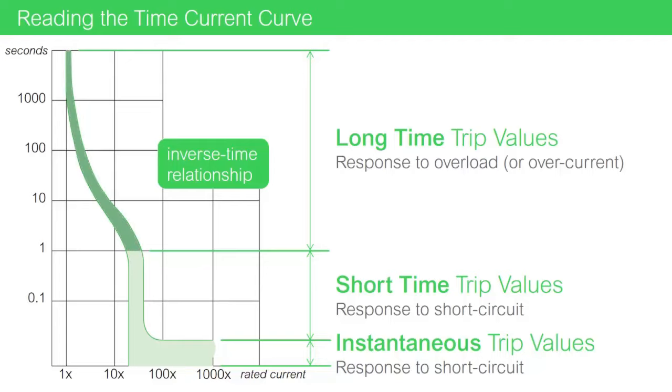Remember the upper range for lower multiples of the rated current represents the long time trip values. The vertical part of the time-current curve represents the short time trip values. And the lower, flattened out part of the time-current curve represents the instantaneous trip values.